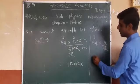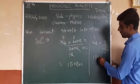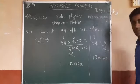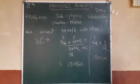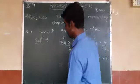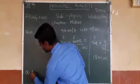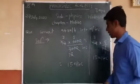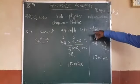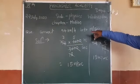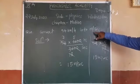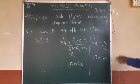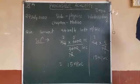So you will get the answer 15 meter per second. 54 kilometer per hour is converted into meter per second, which is 15 meter per second.